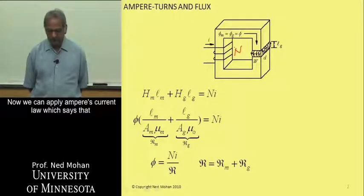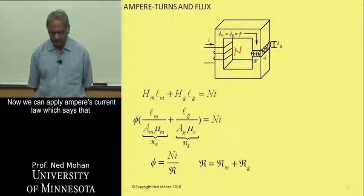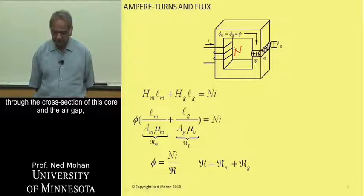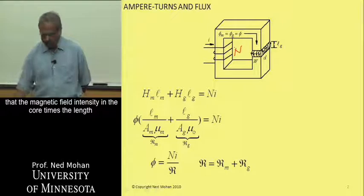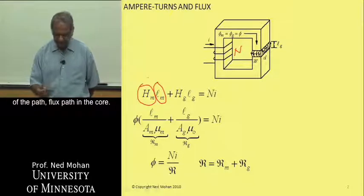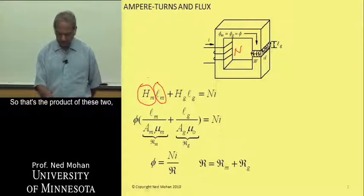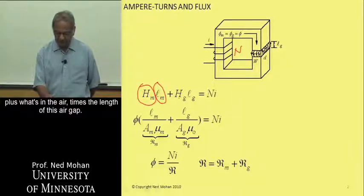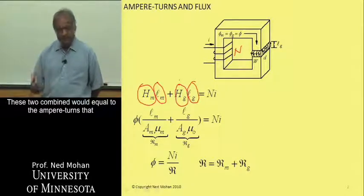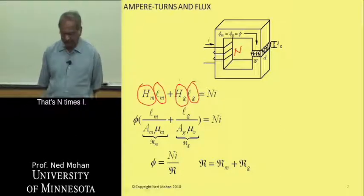Now we can apply Ampere's current law, assuming the magnetic field intensity to be uniform throughout the cross-section of this core and the air gap. The magnetic field intensity in the core times the length of the flux path in the core, plus H in the air times the length of the air gap, equals the ampere-turns applied on this core — that's N times I.